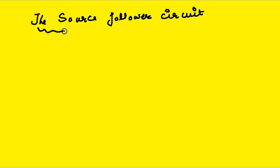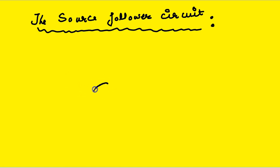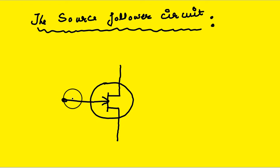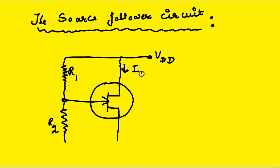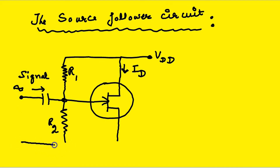Today's topic is the Source Follower circuit of a Field-Effect Transistor. The circuit is called Source Follower because the output is taken across the resistor connected to the source. VD is the supply used for biasing. R1 and R2 are the biasing resistors. The input signal is taken in through a capacitor and applied to the gate.